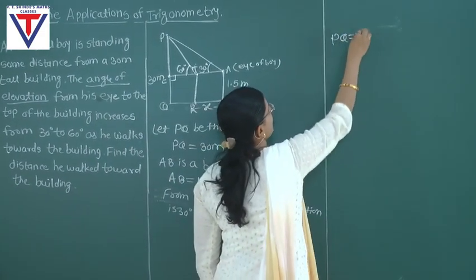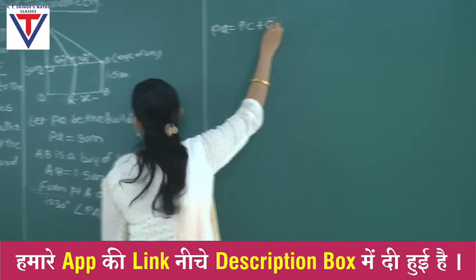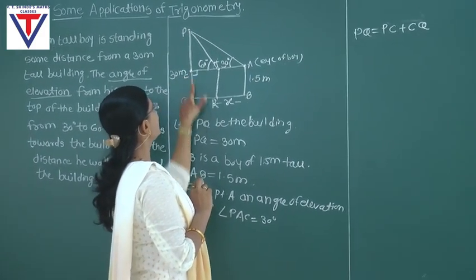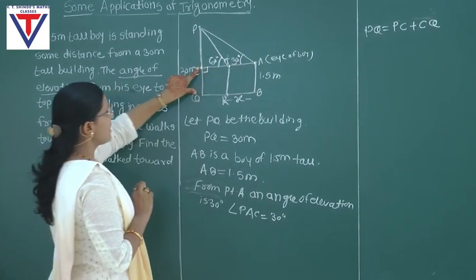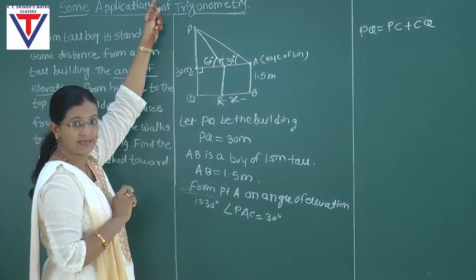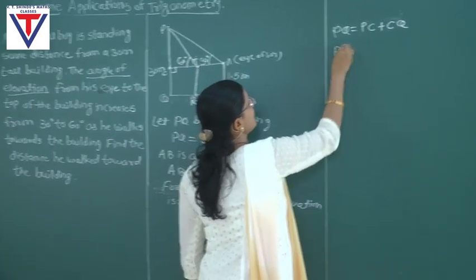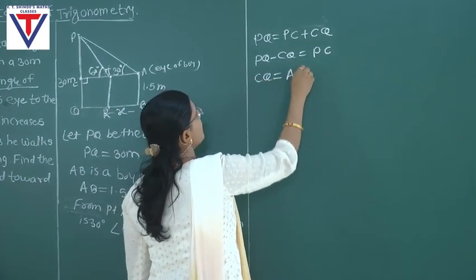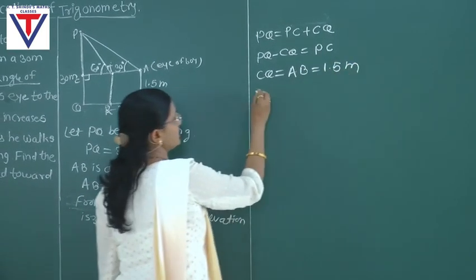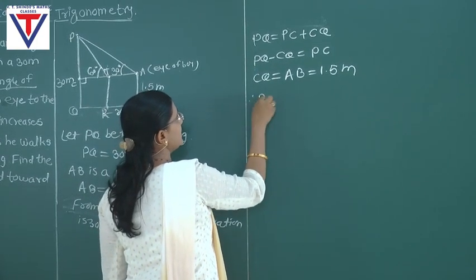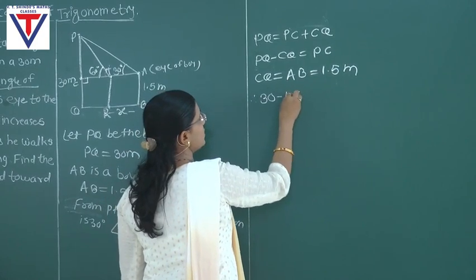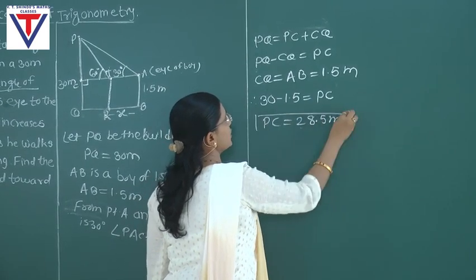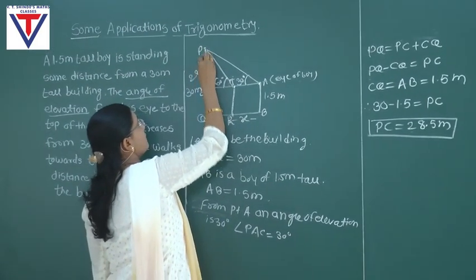PQ is equal to PC plus CQ. The horizontal line AC forms the triangle above. Our PC will be PQ minus CQ. CQ is equal to AB which is equal to 1.5 meters. The total height of the building PQ was 30 meters. CQ's height is 1.5 meters. So PC is equal to 30 minus 1.5, which gives PC equal to 28.5 meters. In this triangle we get the height of 28.5 meters.